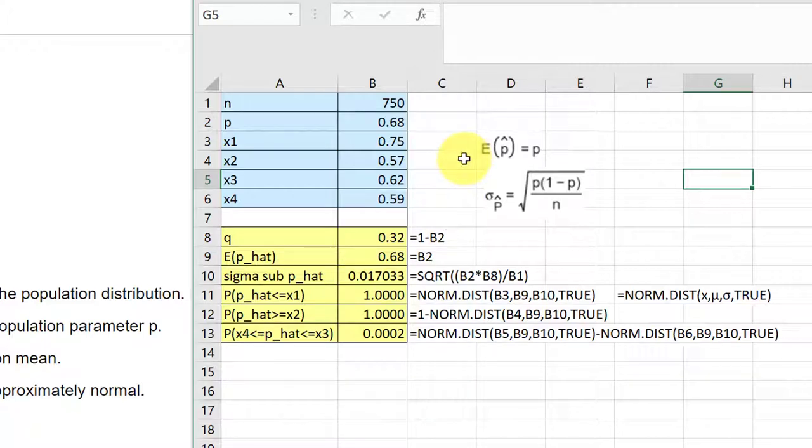Okay, we have to use some formulas here. The expected value, which is the mean of the sampling distribution of a proportion p hat, is just equal to the proportion that we were given, which in this case is 0.68. And down here in my yellow area, I've got that the expected value of p hat is equal to 0.68, and you can see there the formula that's just equal to b2 up there.